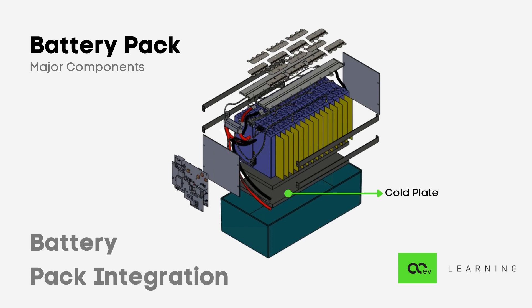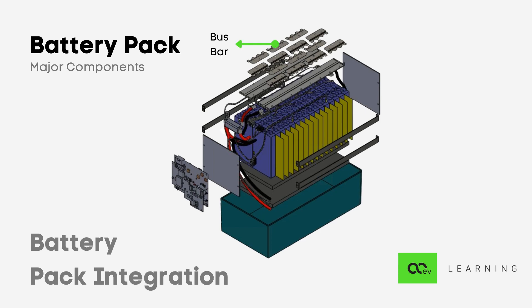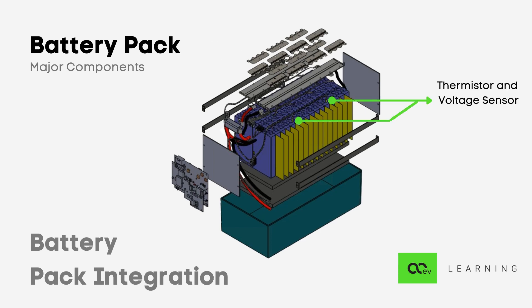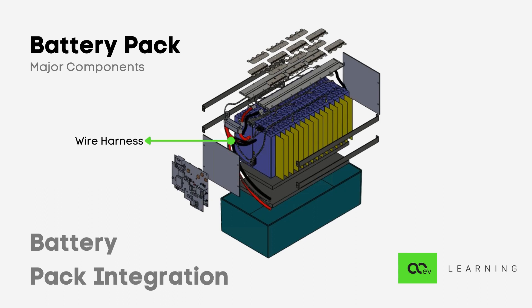Then we have the cold plates, which help in BTMS — battery thermal management. Then we have bus bar holders, which give support to the bus bars. Then we have bus bars, which connect cell to cell. Then we have thermistors, followed by the wiring harness. There are a large number of wires involved in the battery pack because each cell is connected to the BMS through wires, so there should be a very proper wiring harness.